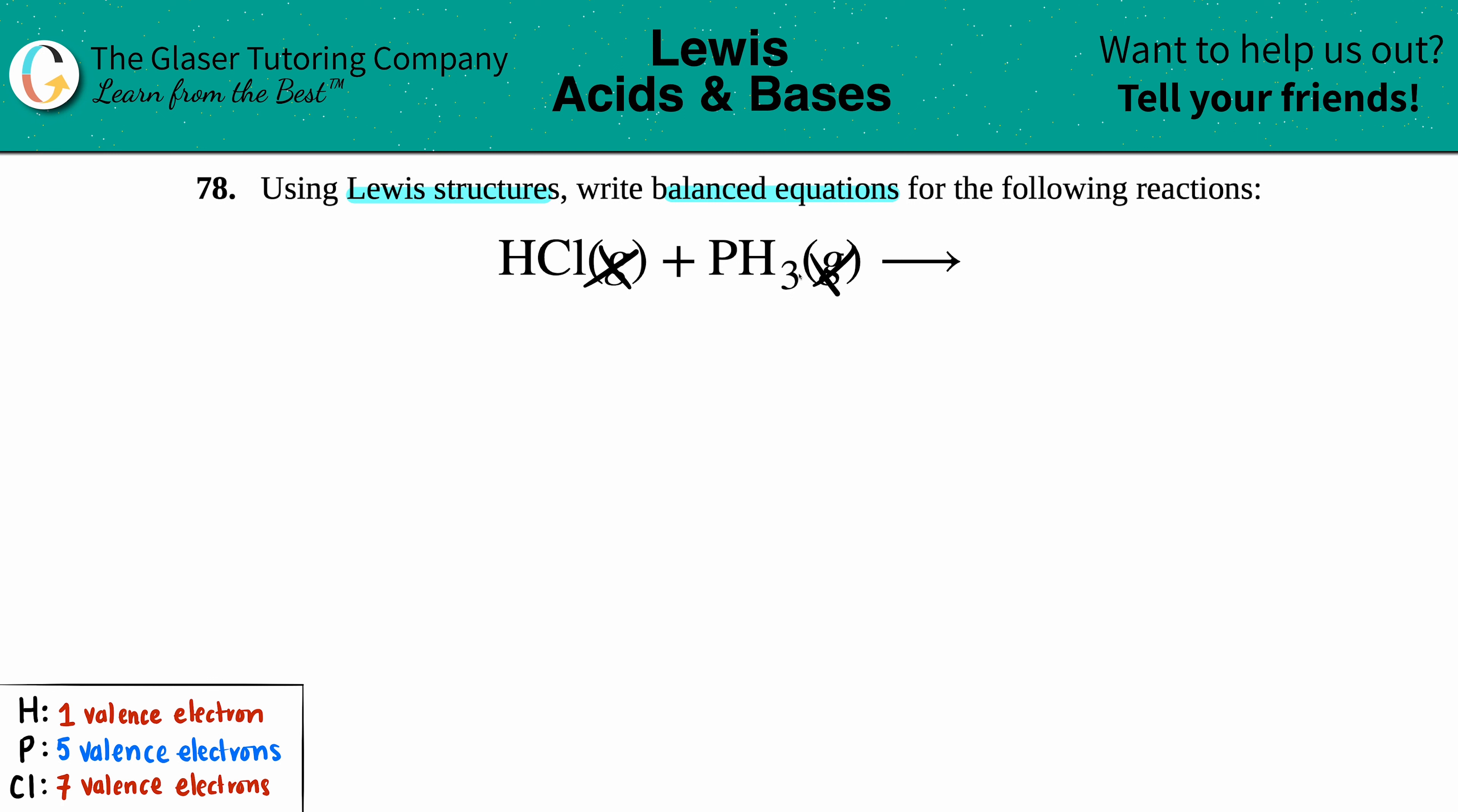For HCl, I have one hydrogen and one chlorine. I put the valence electrons: hydrogen has one valence and chlorine has seven—one, two, three, four, five, six, seven. They have to form at least a single bond, and for hydrogen it's only a single bond. The chlorine has the octet, so this is good.